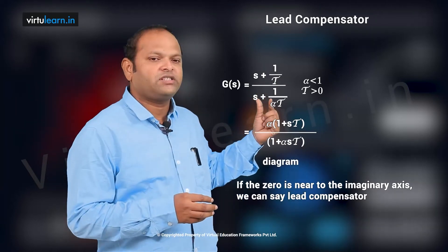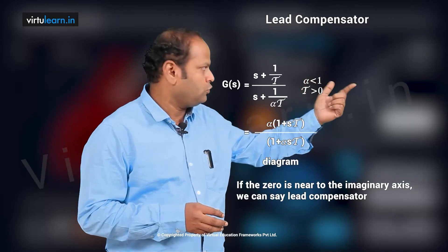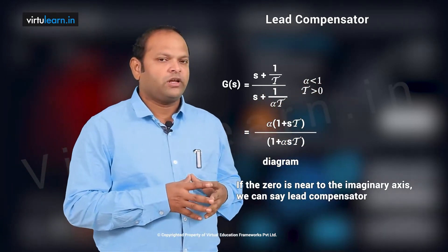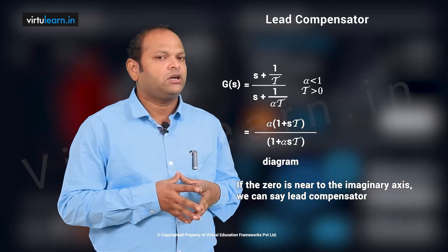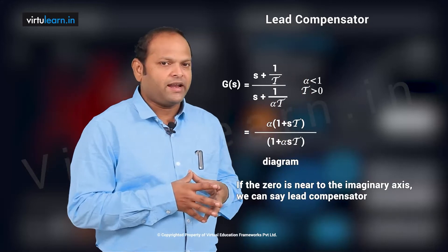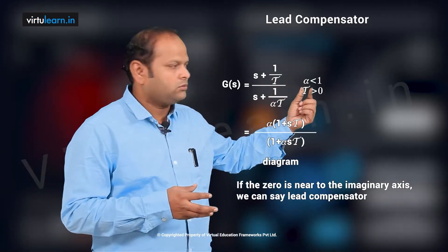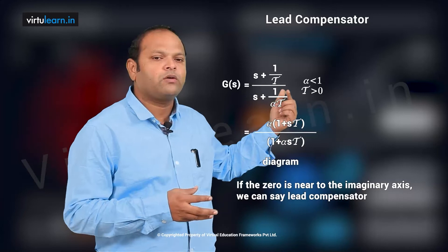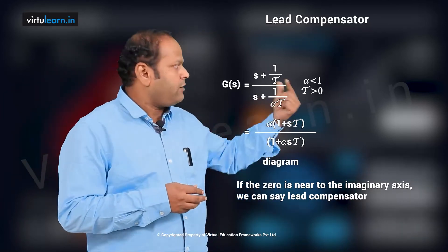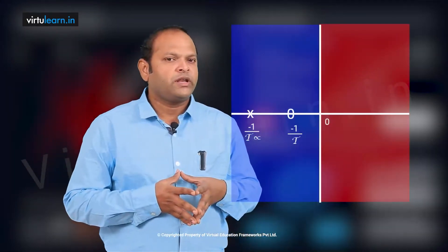The lead compensator transfer function is: GC(S) = (S + 1/τ) / (S + 1/ατ), where α is less than 1 and τ is greater than 0. Simplifying by taking α common, it becomes α × (1 + Sτ) / (1 + ατS).